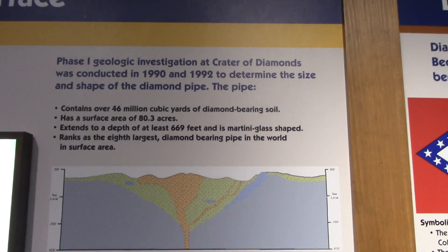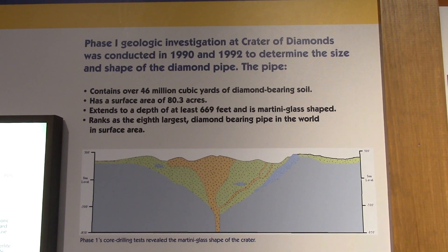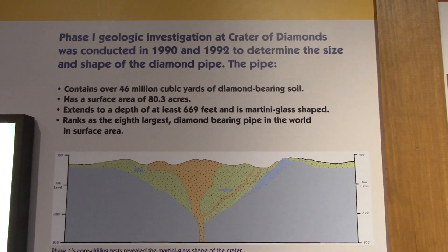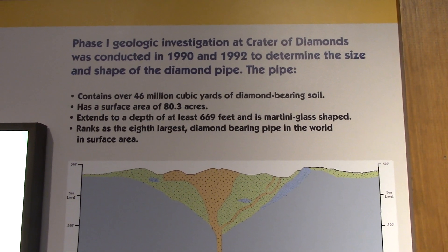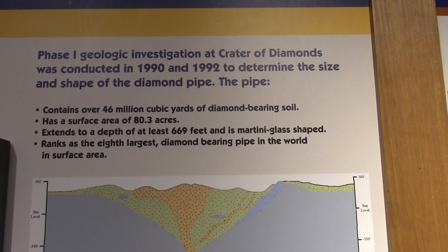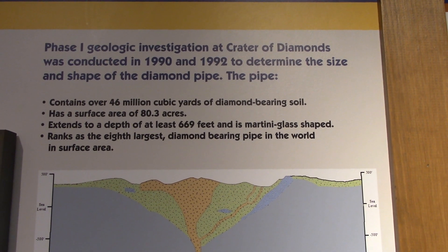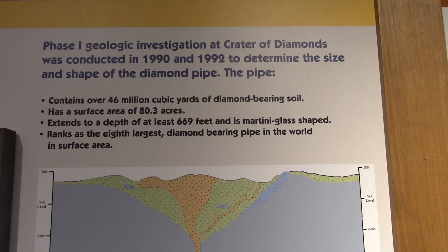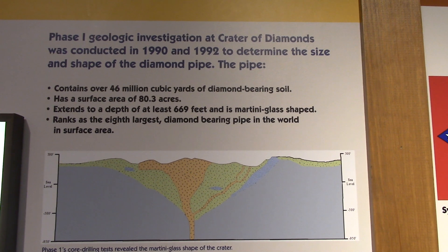There was a phase one geologic investigation at the Crater of Diamonds, conducted in 1990 and 1992, to determine the size and shape of the diamond pipe. The pipe contains over 46 million cubic yards of diamond-bearing soil and has a surface area of 80.3 acres. It extends to a depth of at least 669 feet and is martini glass shaped — not carrot shaped like the other picture showed.